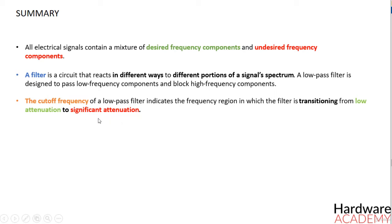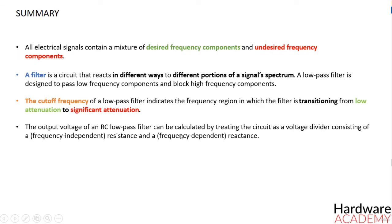The output voltage of an RC low pass filter can be calculated by treating the circuit as a voltage divider, consisting of a frequency independent resistance and a frequency dependent reactance.